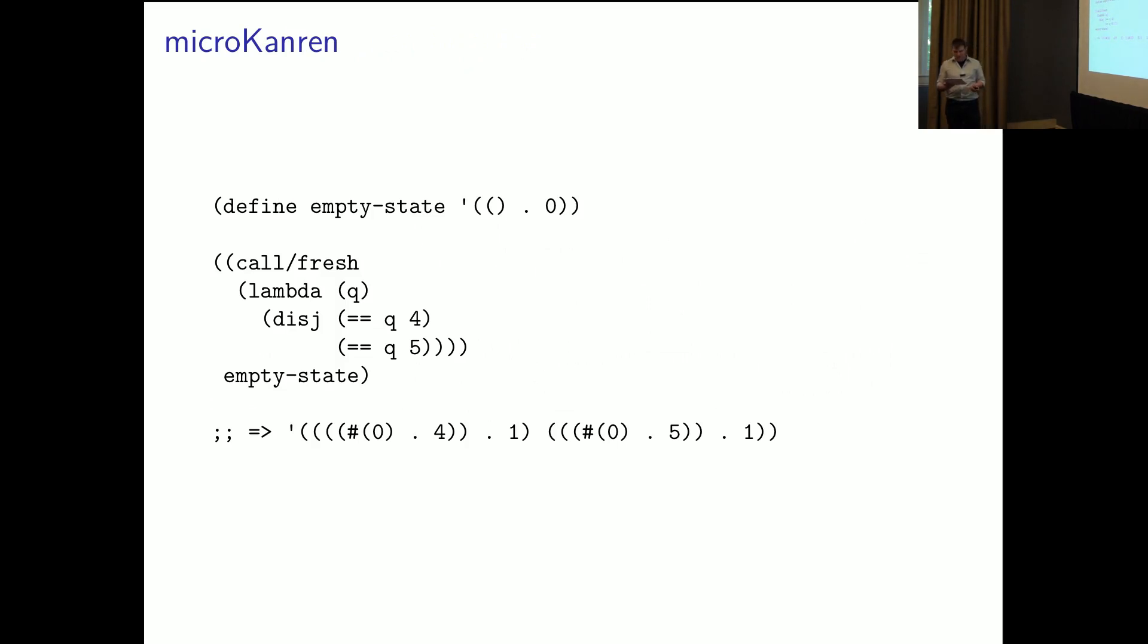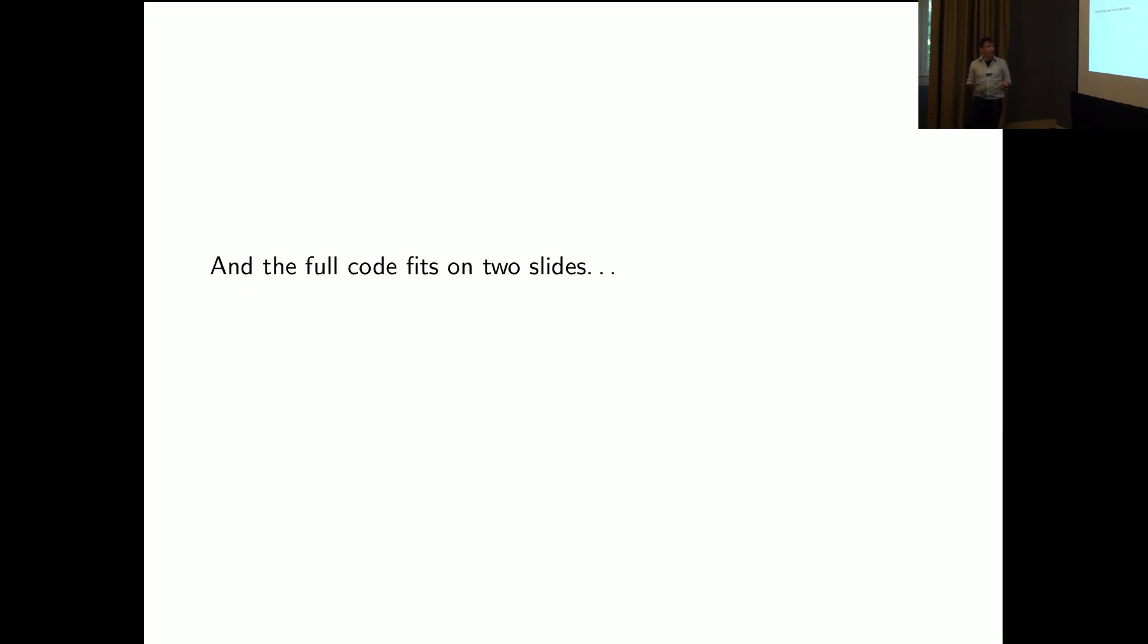Micro Kanren programs operate by applying a goal to a state and producing a new stream of results. The program itself can succeed or fail and when it succeeds returns a sequence of new states. These are substitutions. The four basic constructors we can see here. Call of fresh creates a new logic variable. Dish implements disjunction. The double equal sign is typically syntactic equality. And there's also a conjunction operation.